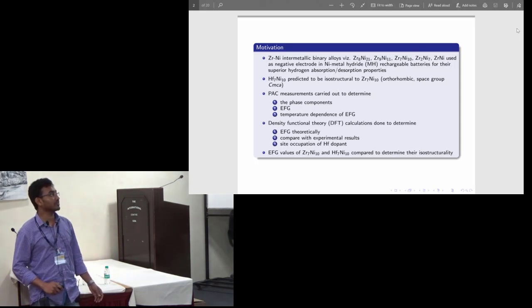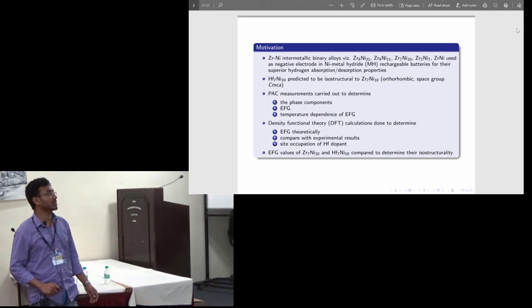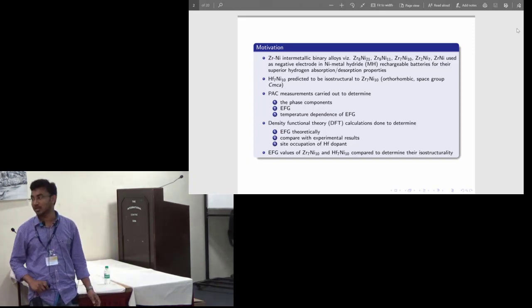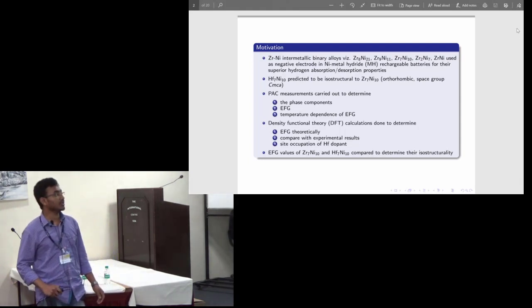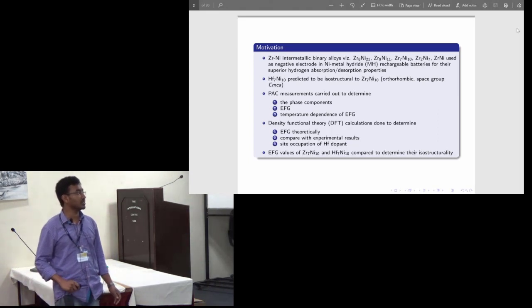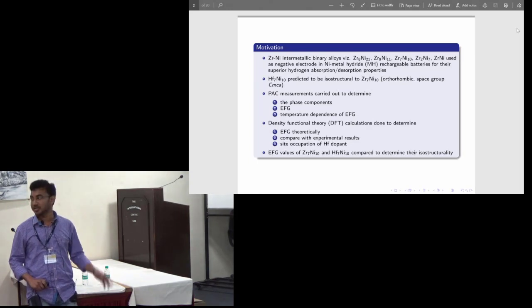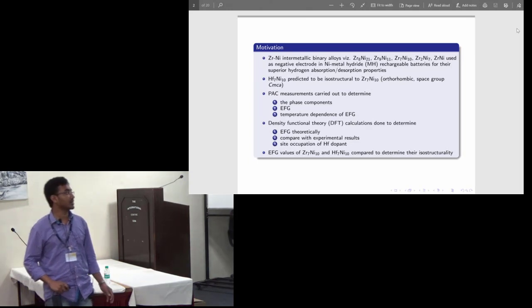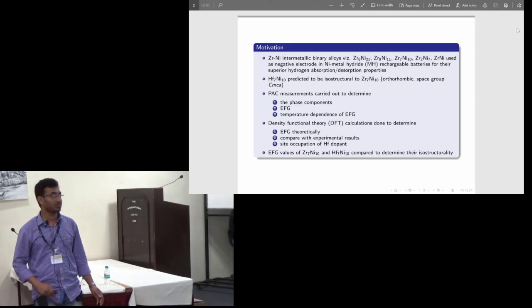We have carried out the PAC study in Hf7Ni10. Actually, the structural properties of Hf7Ni10 are not well known. It has been predicted that it is isostructural to Zr7Ni10. We have carried out the PAC measurement in both these compounds to get the phase components, electric field gradients, and to study the temperature dependence of electric field gradients. DFT calculations have been carried out to get the value of EFG theoretically and compare with the experimental values, to know the site occupation of hafnium dopants in the different crystallographic positions, and we have also compared the EFG values of these two compounds.